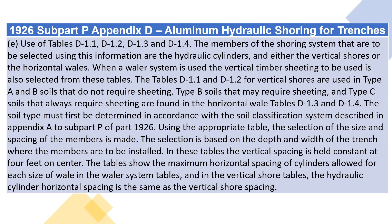E. Use of Tables D1.1, D1.2, D1.3, and D1.4. The members of the shoring system that are to be selected using this information are the hydraulic cylinders and either the vertical shores or the horizontal whales. When a whaler system is used, the vertical timber sheeting to be used is also selected from these tables. The tables D1.1 and D1.2 for vertical shores are used in type A and B soils that do not require sheeting. Type B soils that may require sheeting and type C soils that always require sheeting are found in the horizontal whale tables D1.3 and D1.4.